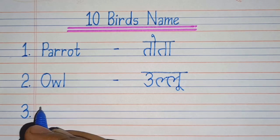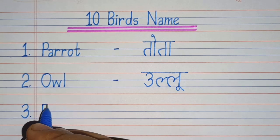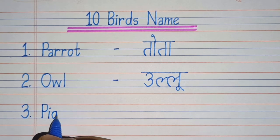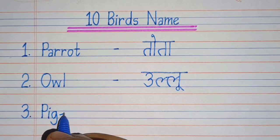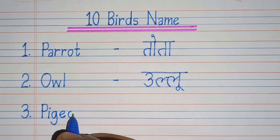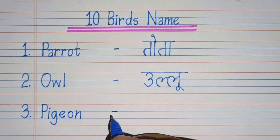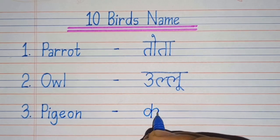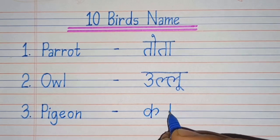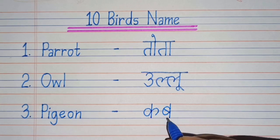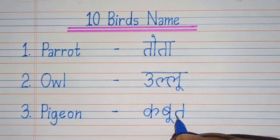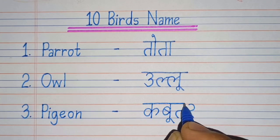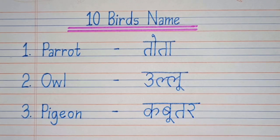Third number: P-I-G-E-O-N, Pigeon. Pigeon means Kabooter.